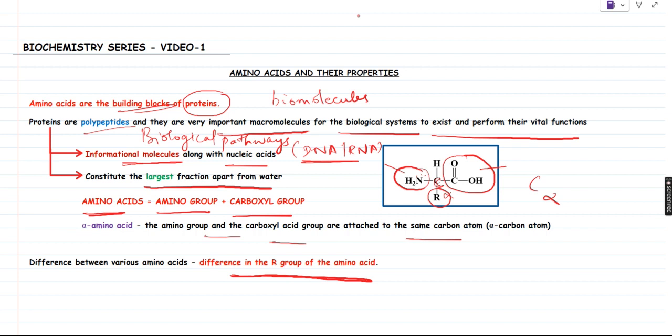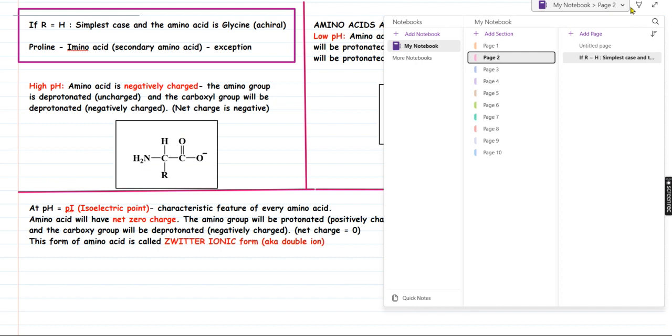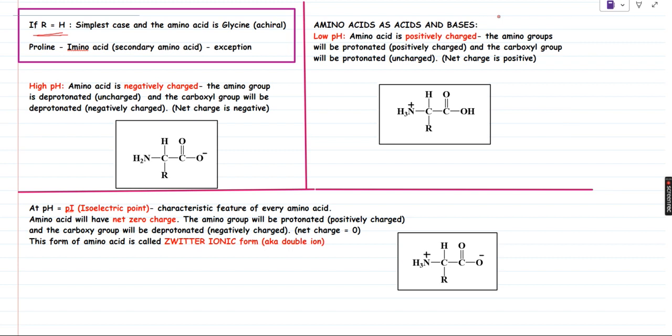Moving on to the next slide. If the R group is simply a hydrogen atom, then this is the simplest case and the amino acid is glycine. If you take proline into consideration, it is not a typical amino acid structure, but it is still called an amino acid. This is because the C-alpha carbon is connected to a secondary amino group, not a primary amino group. So this is again an exception.